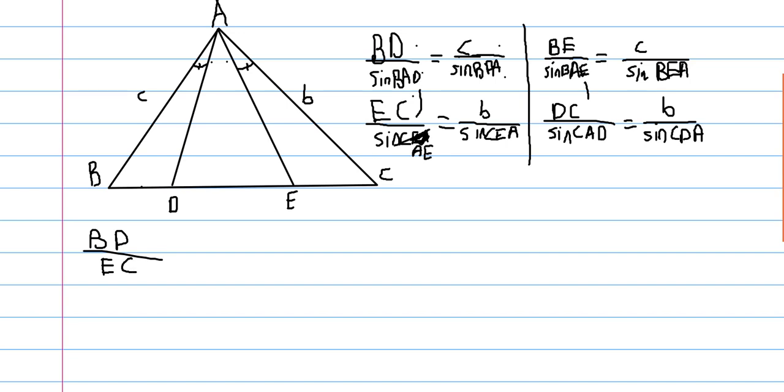These sines cancel out, and then we're left with c over b